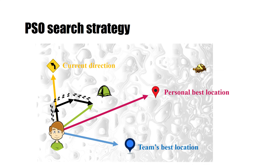The new position might be better or worse than the best value found by Bob or the entire team. If it is better than the personal best, Bob needs to update his record before he goes to bed. If it is better than the team's best location, he needs to update his record again and inform the rest of the team. If the new location is not better, Bob doesn't need to take any actions.